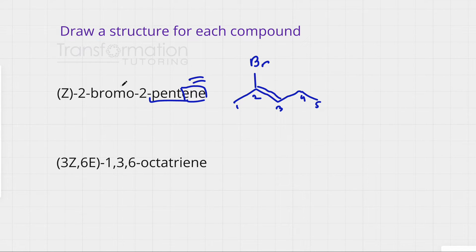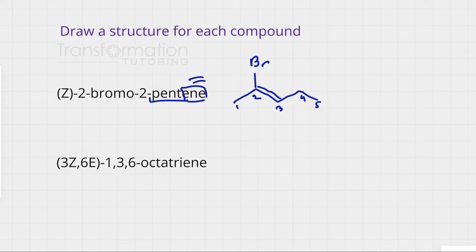Next, this molecule must be Z. What I'm going to do is see if I have drawn a Z or E configuration. If it is Z, I'll leave it alone; if it is E, I'll switch my groups. To determine this, I need to identify my double bond and look at each carbon from the double bond separately.